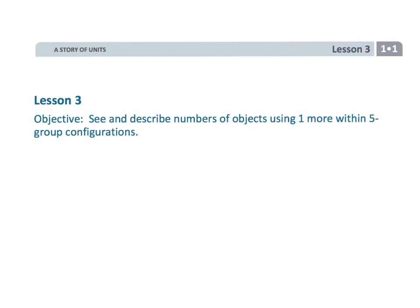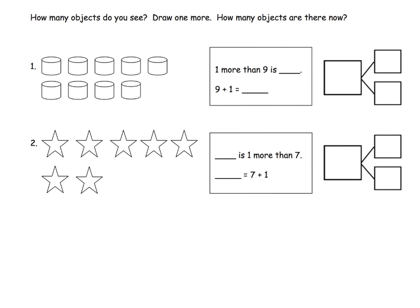All right, this is Grade 1 Module 1 Lesson 3 where we're going to be talking about one more. We're going to be using objects to talk about one more. So here it says how many objects do you see, draw one more, and then how many objects are there now?